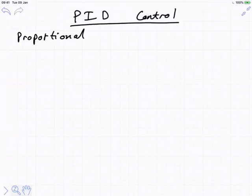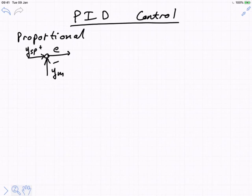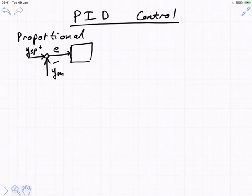The first thing to understand about proportional action is this: we always have this little calculation in mind. The error is always calculated as the set point minus the measurement. The kind of controller we are designing right now is proportional control, which is easily represented by a simple gain. Proportional control doesn't have any dynamics inside the system itself.